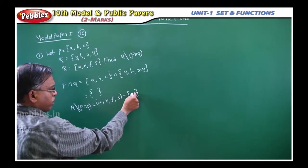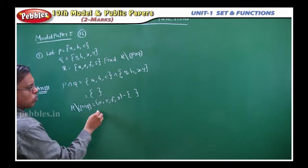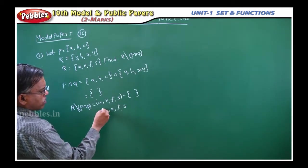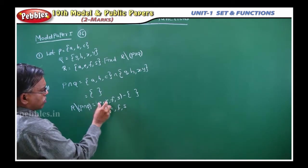Anyway, there is no element in P intersection Q. So all the R elements will come: A, F, S. So that is your set.